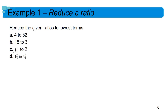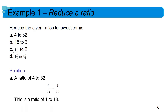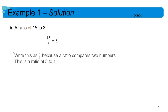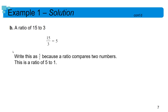Just like fractions, we always reduce ratios. You wouldn't write a fraction as 10 over 40 — you'd reduce it to one fourth. Same thing goes with ratios, because ratios are really just a specialized use of fractions. So you'd never write 4 over 52; you'd reduce it to 1 over 13. And 15 to 3 reduces to 5 to 1. Notice that 5 to 1 is completely different from 1 to 5 — with ratios, order matters, just as with fractions.